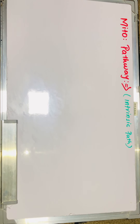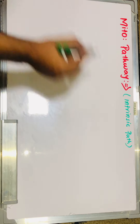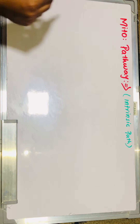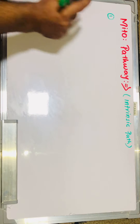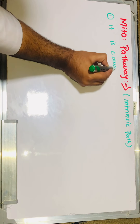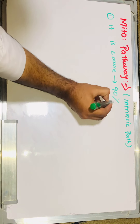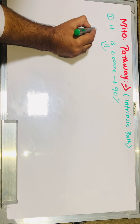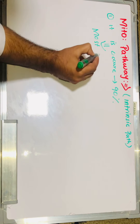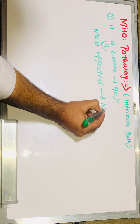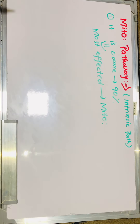Hello guys, welcome back. In today's lecture we will discuss the second mechanism of apoptosis, which is the mitochondrial pathway, also called the intrinsic pathway of apoptosis. In the previous lecture we had already discussed the death receptor pathway. The first point about the mitochondrial pathway is that it occurs in about 90% of cases of apoptosis, and that's why the most affected organelle in apoptosis is the mitochondria.